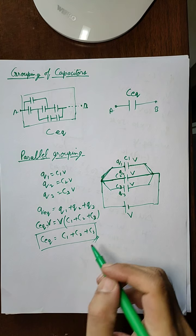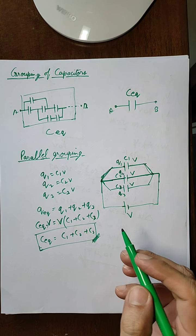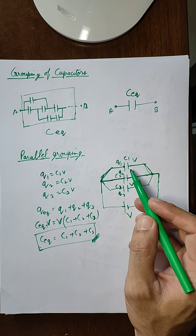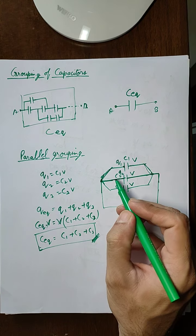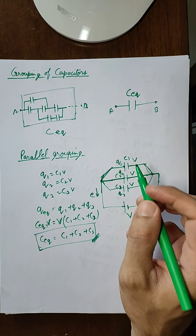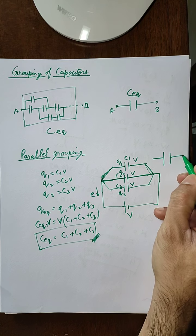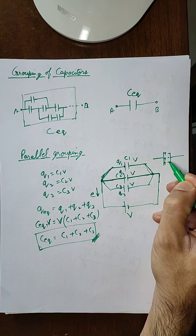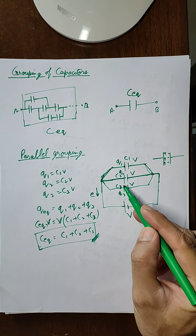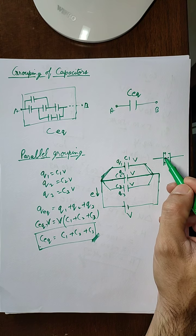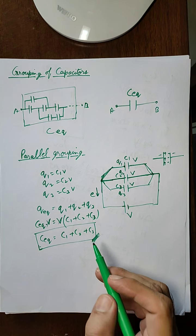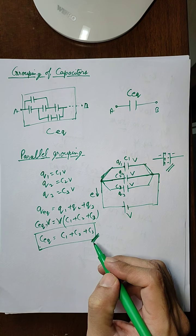The second important thing to understand — beyond the formula — is the charge distribution on both plates. Since all the left plates are connected to the positive terminal, electrons are attracted away by the positive terminal, causing positive charge on the left side of each capacitor. The negative terminal deposits negative charge on the right side. The charge accumulates on the inner surfaces; the outer surfaces will not have any charge. These are the two important things: the mechanism of charging and the formula for parallel capacitance.